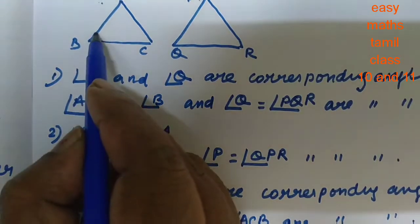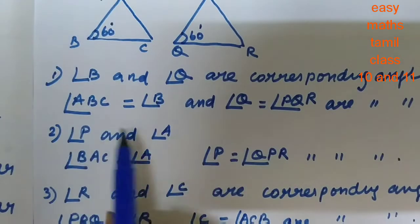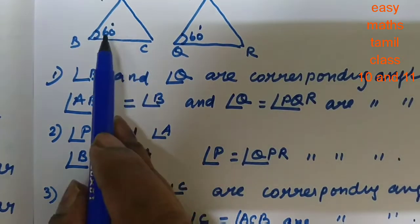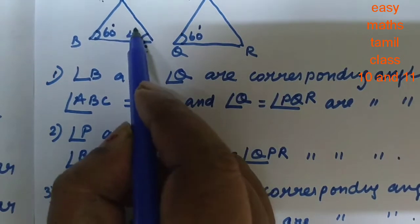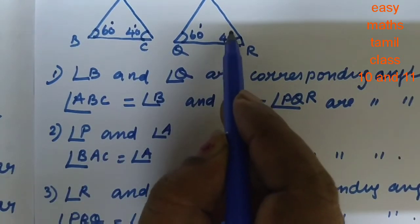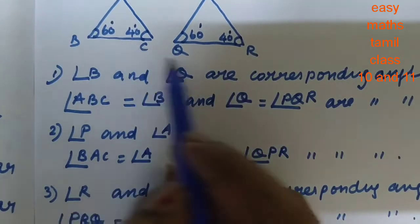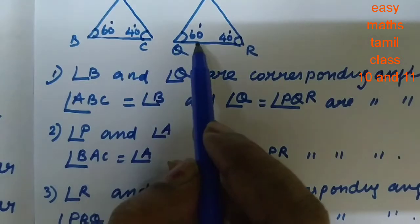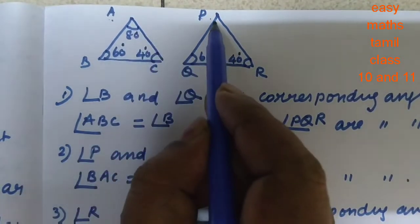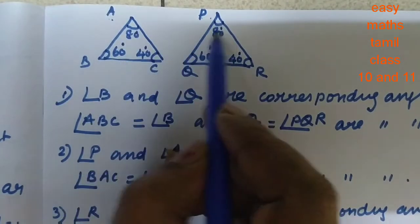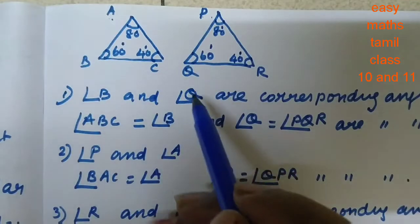For example, if angle B is 60 degrees, then angle Q should also be 60 degrees — then only they are similar triangles. If angle C is 40 degrees, then angle R should also be 40 degrees. At the same time, angle A equals 80 degrees and angle P equals 80 degrees. The corresponding angles should be the same — then only the triangle is said to be a similar triangle.